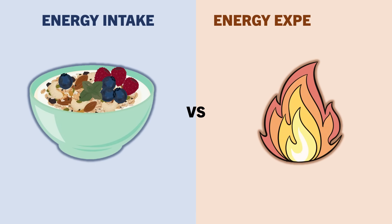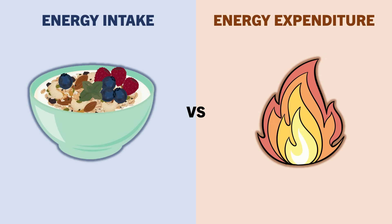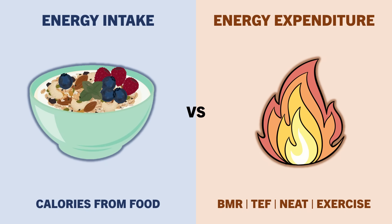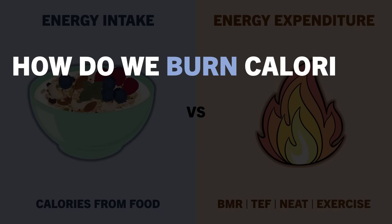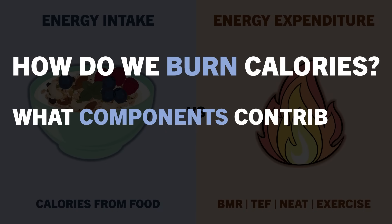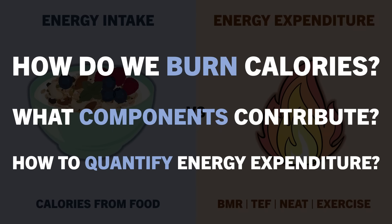The balance between our energy intake and expenditure is what determines long-term body weight change. While the energy intake side of the equation is fairly straightforward, the expenditure side is far more complex. So how exactly do we burn calories each day? What components contribute to this, and how can we accurately quantify energy expenditure?